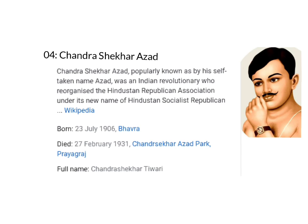The fourth one is Chandrasekhar Azad, popularly known by the name he gave himself — Azad. His full name is Chandrasekhar Tiwari. Chandrasekhar Azad had taken up arms against the British government. When he was surrounded by British soldiers, he shot himself dead rather than being captured and killed by them. He was born on 23rd July 1906 in Bhavra.